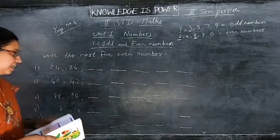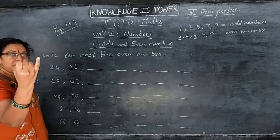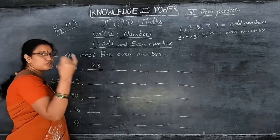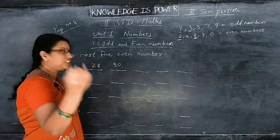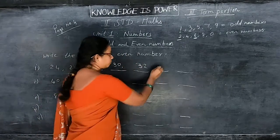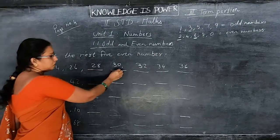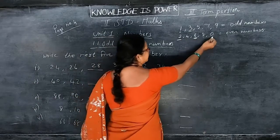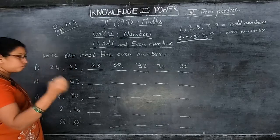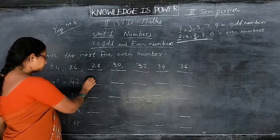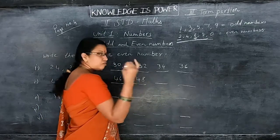We are going to continue the next 5 even numbers. See here: 24, 26 is there, then 28, 30, 32, 34, 36. You count by 2s. For 40 and 42: continue 44, 46, 48, 50. For 88 and 90: continue 92, 94, 96, 98, 100.